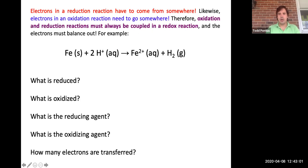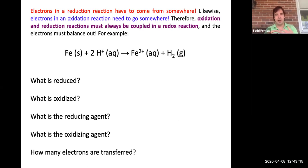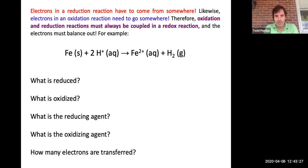So now let's talk about how we write out these reactions. Electrons in a reduction reaction have to come from somewhere, and the electrons from an oxidation reaction need to go somewhere — so they always need to be paired up. You always need a reduction paired with an oxidation. That's where we get the portmanteau 'redox.' Here we have an example of iron reacting with acid — if you pour acid onto iron, it will corrode pretty readily.